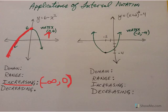Then the graph, once it hits its peak here, then it starts going downhill. It starts going downhill or decreasing from zero to infinity.